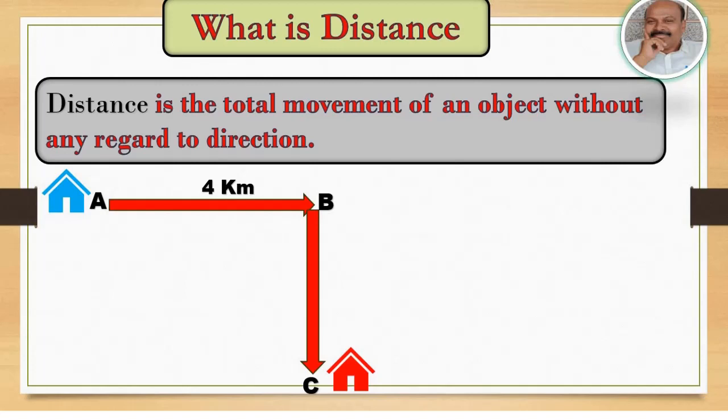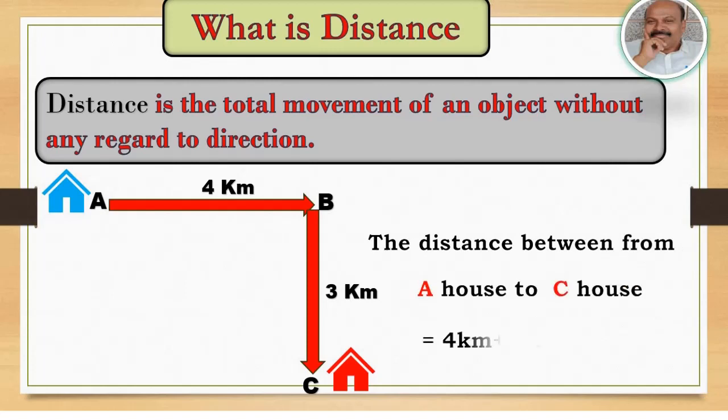Now find the distance between A house to C house. A to B is 4 km and B to C is 3 km. Total distance is 7 km.